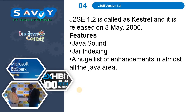Java 1.3 is released on 8th May 2000. Features are Java Sound, JAR Index, and a huge list of enhancements in almost all the Java areas.